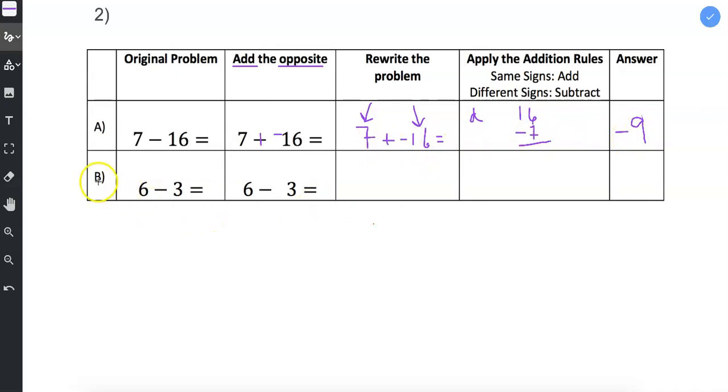All right, part B, 6 minus 3. All right, so we add the opposite. So I change the subtraction to addition. And I record the opposite of 3, which is negative 3.